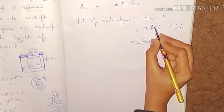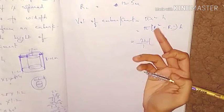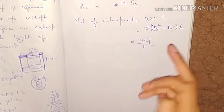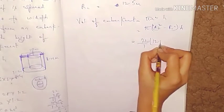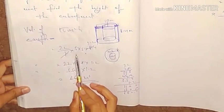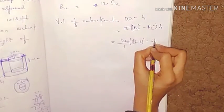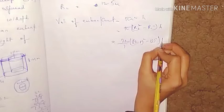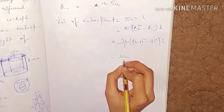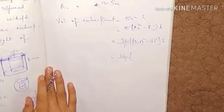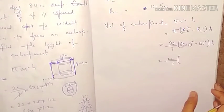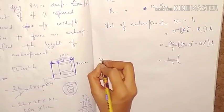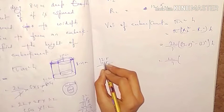Pi is 22/7. The external radius r2 is 12.5, and the internal radius r1 is 5. So we have 22/7 × (12.5² - 5²) × h. Now we calculate 12.5 squared.